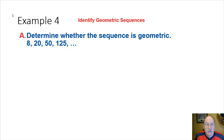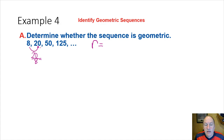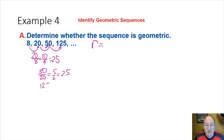Now let's determine whether a sequence is geometric by looking for a common ratio. For the sequence 8, 20, 50, 125: 20 ÷ 8 = 2.5, 50 ÷ 20 = 2.5, and 125 ÷ 50 = 2.5. The common ratio is 2.5, and indeed this sequence is geometric.